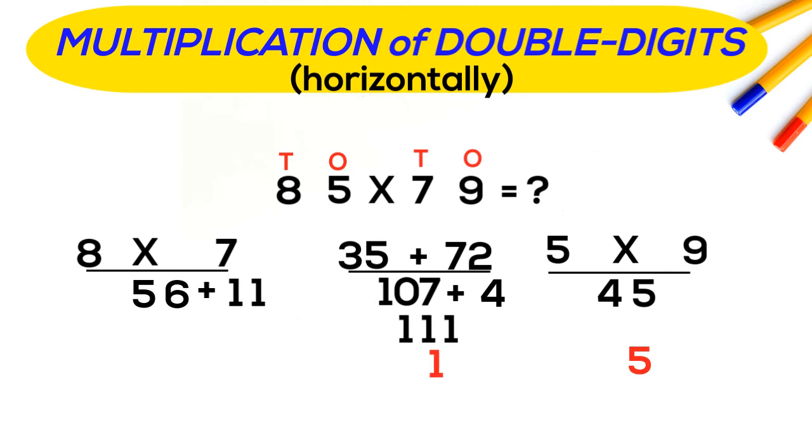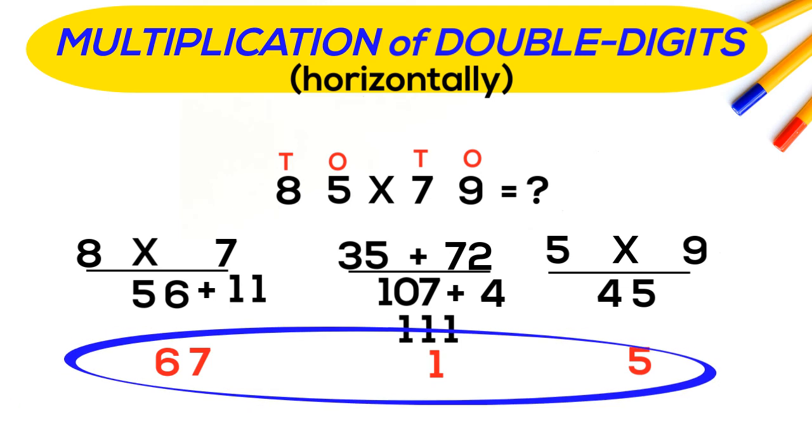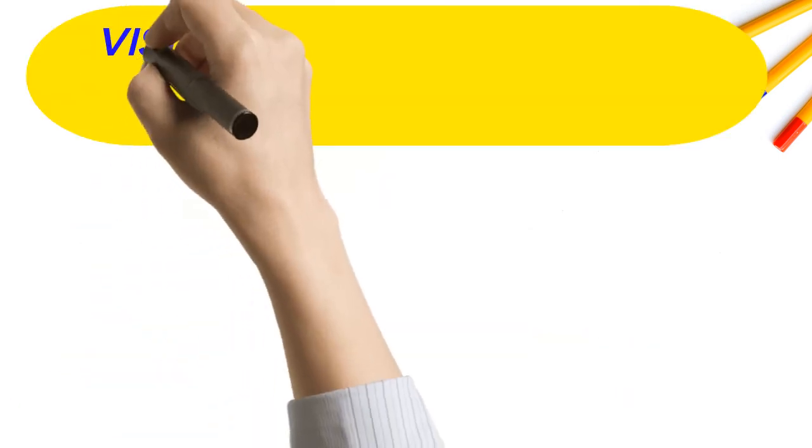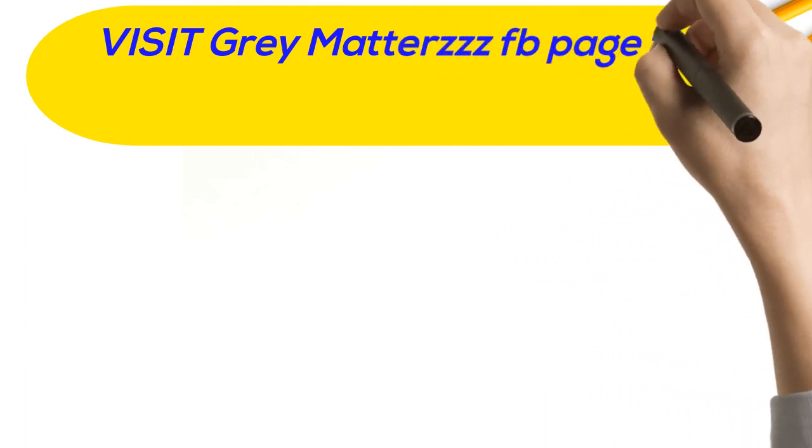256, that becomes 67. Our final answer: 6715. For free worksheets of multiplication problems, visit Grey Matters Facebook page.